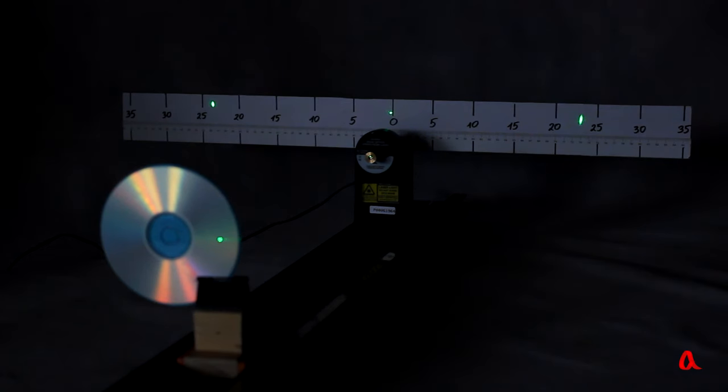In our experiment, the distance from the disc to the screen is 60 cm. The distance from the central spot to the first side spot is 23 cm.